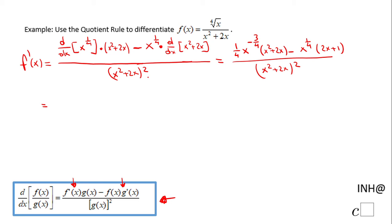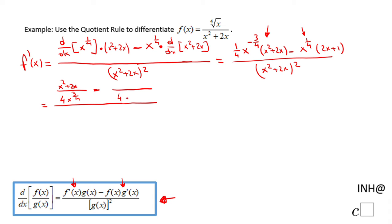Now let's do some simplification. The first thing I'm going to do is simplify the first term of the numerator, which is nothing else than x squared plus 2x over 4x to the 3 fourths — I'm changing that negative exponent to a positive exponent — minus. Now on the second part, I'm going to come up with the same denominator, which is 4x to the 3 fourths, and I'm going to copy the numerator x to the 1 fourth times 2x plus 2. And since I came up with this denominator, I'm going to have to multiply the numerator by the same quantity.